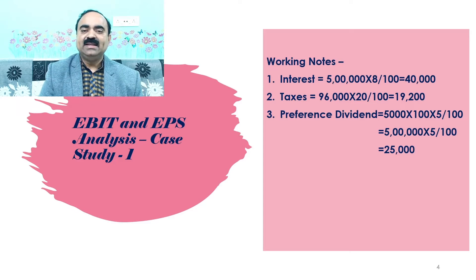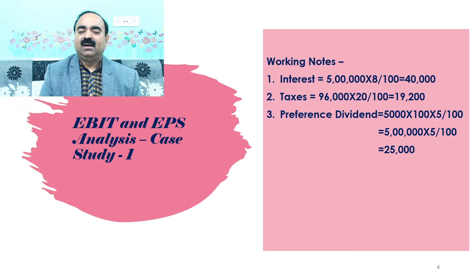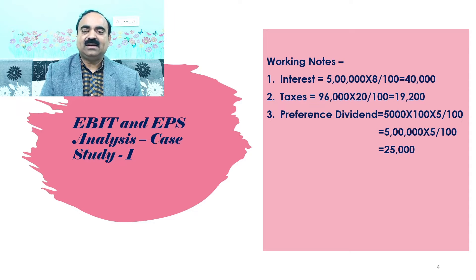Dear students, in this slide I had given working notes of the previous case study. 1. Interest: 8% debentures were given worth ₹5 lakhs. Therefore, interest = ₹5 lakhs × 8/100 = ₹40,000. 2. Taxes: the company is in the 20% tax bracket. Earnings before taxes are ₹96,000 × 20/100 = ₹19,200. 3. Preference dividend is calculated by taking 5,000 shares at the rate of ₹100 each and preference dividend percentage of 5%, giving preference dividend of ₹25,000.